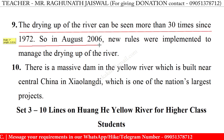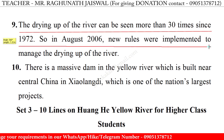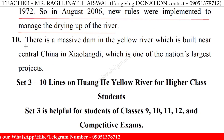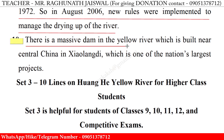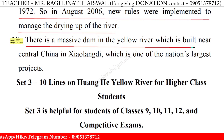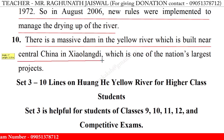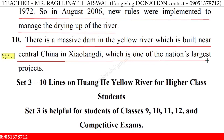So, in August 2006, new rules were implemented to manage the drying up of the river. 10. There is a massive dam in the Yellow River which is built near central China in Xiaolangdi, which is one of the nation's largest projects.